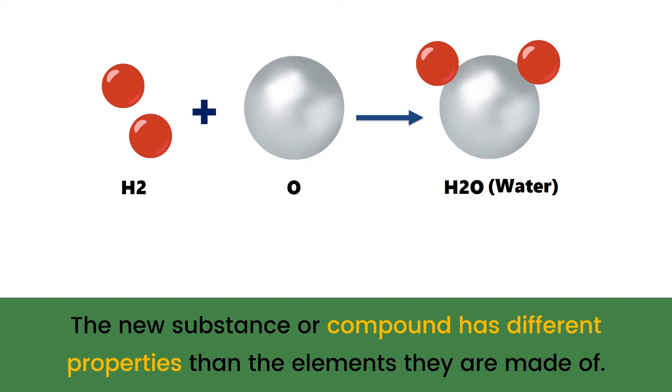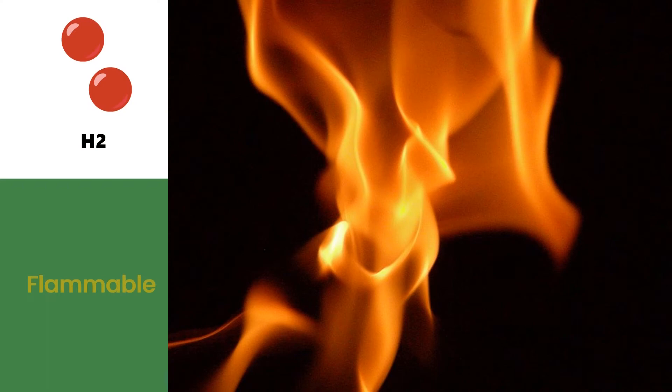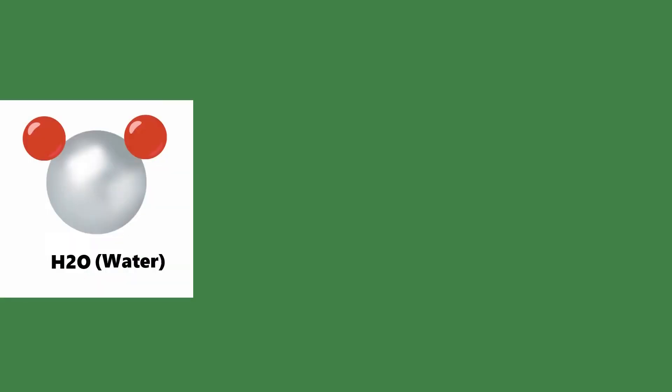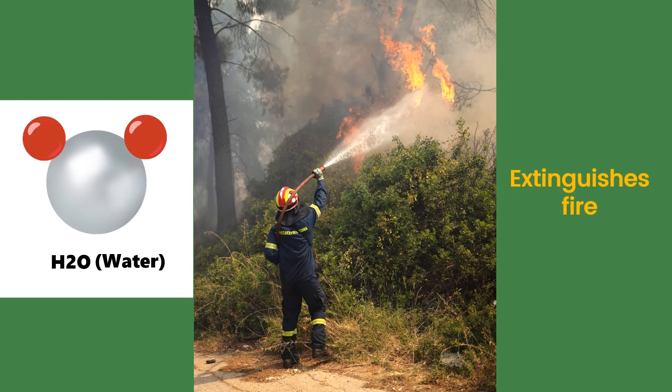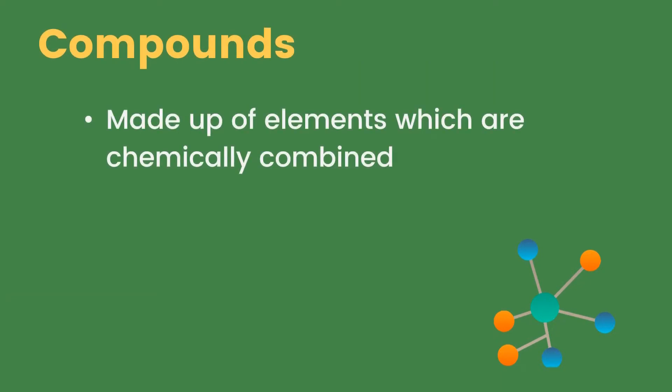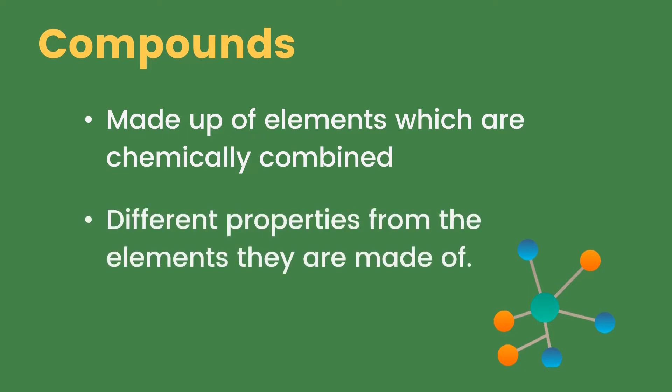The new substance or compound has different properties than the elements they are made of. Hydrogen and oxygen are both gases, but they form a liquid compound. Additionally, hydrogen is very flammable, and although oxygen is not flammable, it can make fire burn hotter and faster. However, water, which is their combination, kills or extinguishes fire. Thus, compounds are made up of elements which are chemically combined. They have different properties from the elements they are made of.